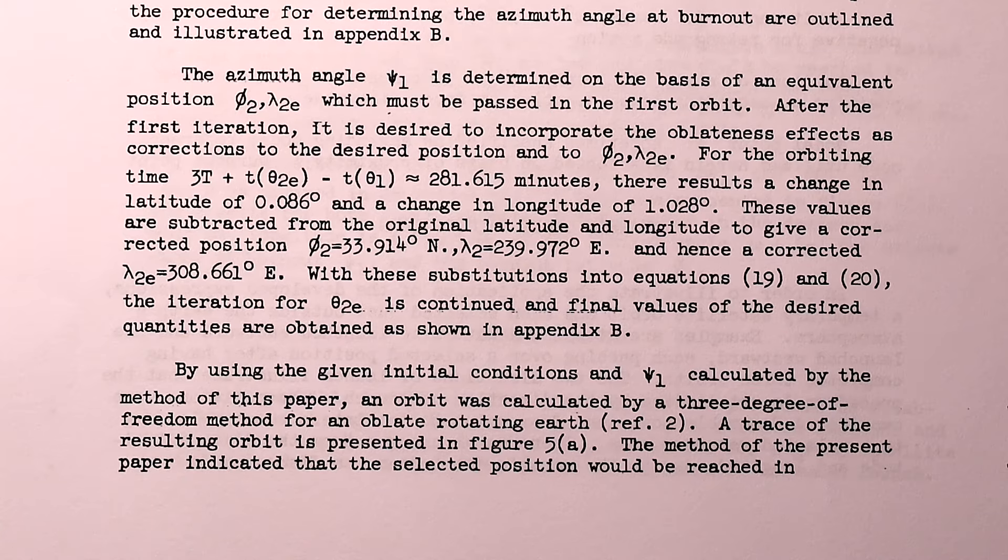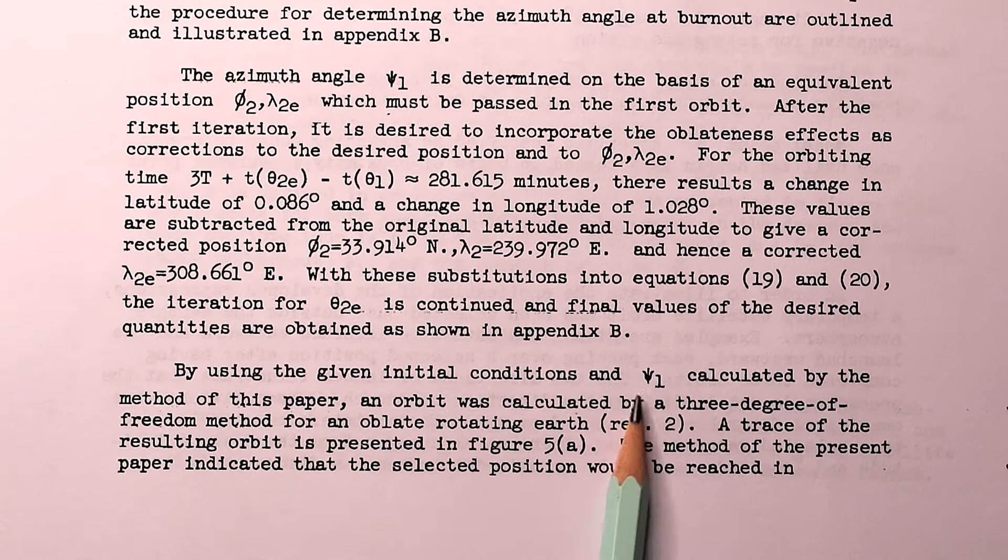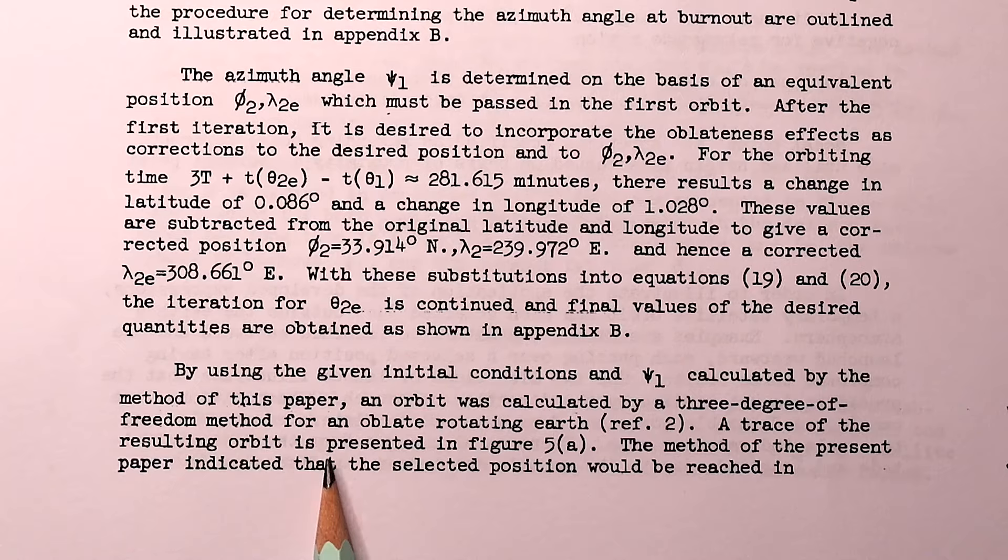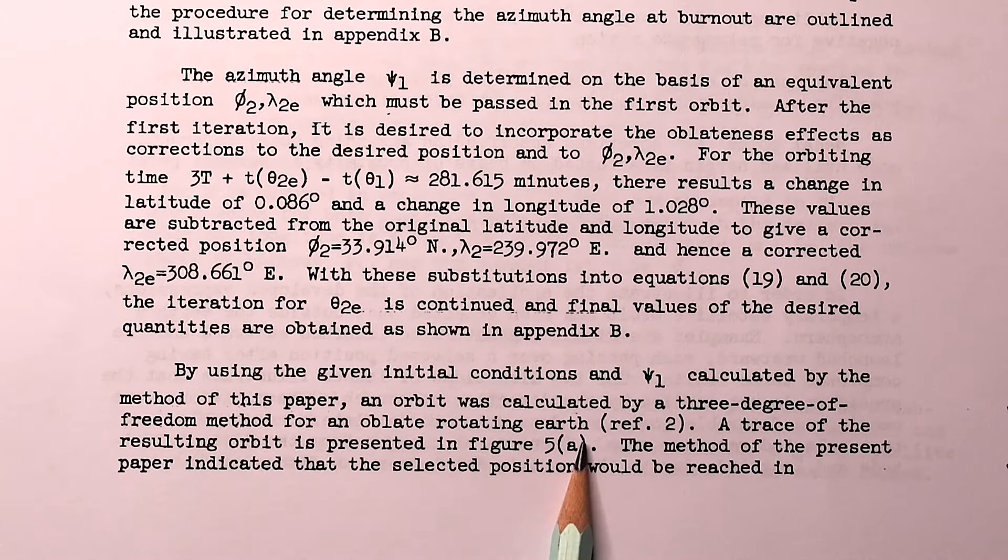Going back to compare our results with that of the new IBM computer, it says that using the azimuth angle calculated by the method of this paper, an orbit was calculated by the computer for an oblate rotating earth.